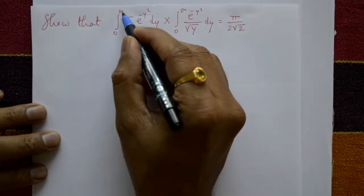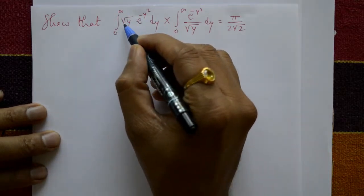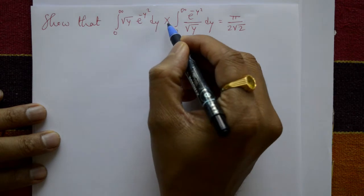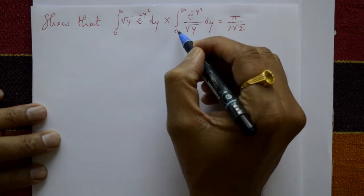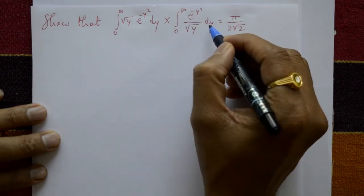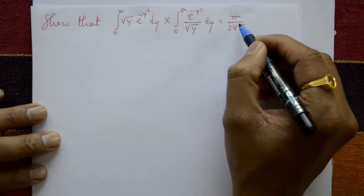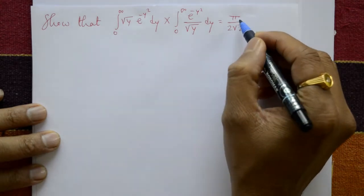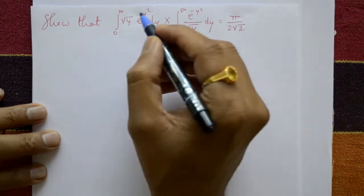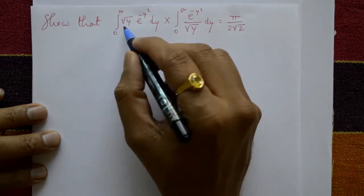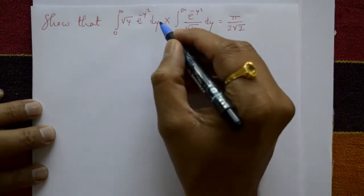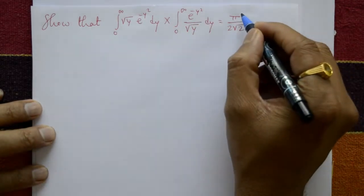Show that the integration of 0 to infinity of square root y times e raised to minus y squared dy, multiplied by the integration of 0 to infinity of e raised to minus y squared divided by root y dy, equals pi upon 2 root pi. These are indefinite integrals; by converting into gamma functions, prove the right hand side.